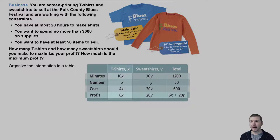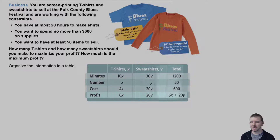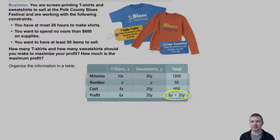Finally, profit — we want to maximize profit. For t-shirts (x), that's 6x, representing a profit of $6 per shirt. For sweatshirts (y), that's 20y, representing $20 profit per sweatshirt. The total profit expression is 6x plus 20y. Note this is the only entry in the total column with variables — this is the expression we want to maximize. It's the objective function: profit.